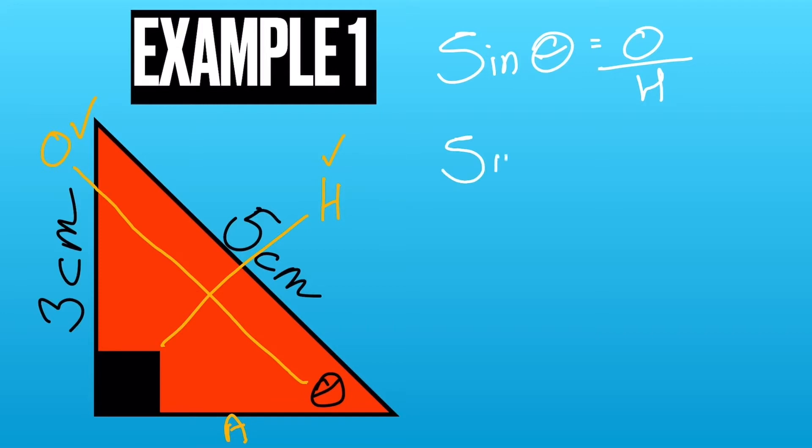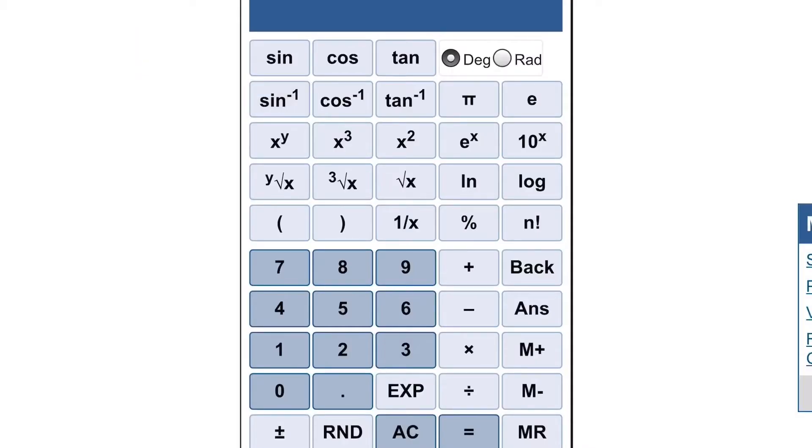So sine theta must equal 3 over 5. So theta is the inverse sine or arc sine of 3 over 5. So we go to our calculator and press shift sine.